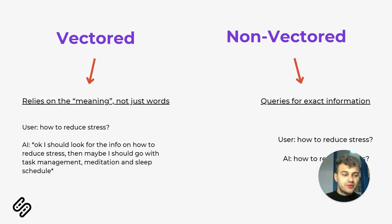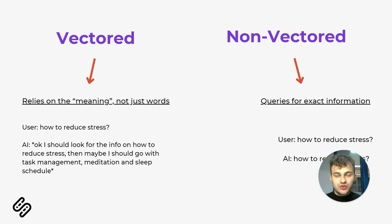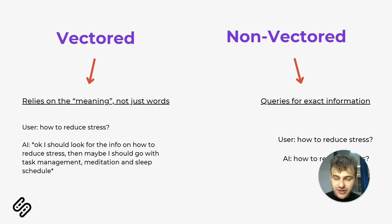Vector data relies on meaning. For example, if you ask AI how to reduce stress, it will not just search for data that includes the words 'reduce,' 'stress,' or 'how to.' It will understand the meaning of the query, and the numerical representation of your text input helps it achieve this.